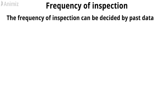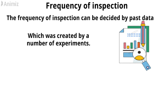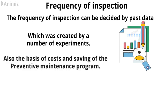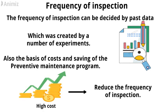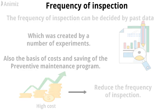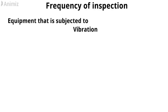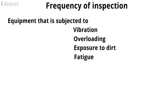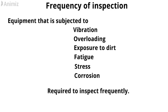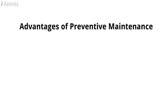The frequency of inspection can be decided by past data created from a number of experiments, as well as the basis of costs and savings of the preventive maintenance program. If the cost is very high, it is better to reduce the frequency of inspection. Equipment subjected to vibration, overloading, exposure to dirt, fatigue stress, or corrosion requires more frequent inspection.